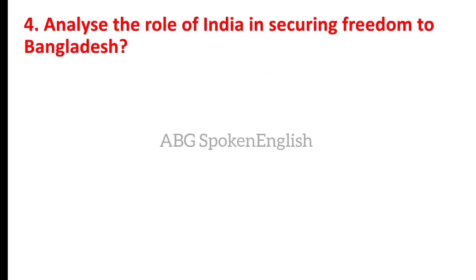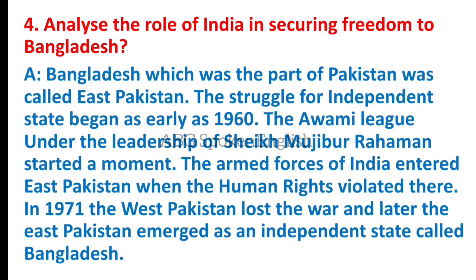Analyze the role of India in securing freedom for Bangladesh. Bangladesh, which was a part of Pakistan, was called East Pakistan. The struggle for an independent state began as early as 1960. The Awami League under the leadership of Sheikh Mujibur Rahman started a movement. The armed forces of India entered East Pakistan when human rights were violated. In 1971, West Pakistan launched the war, and later East Pakistan emerged as an independent state called Bangladesh.